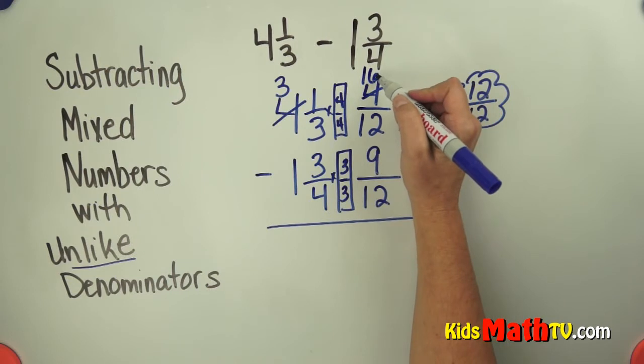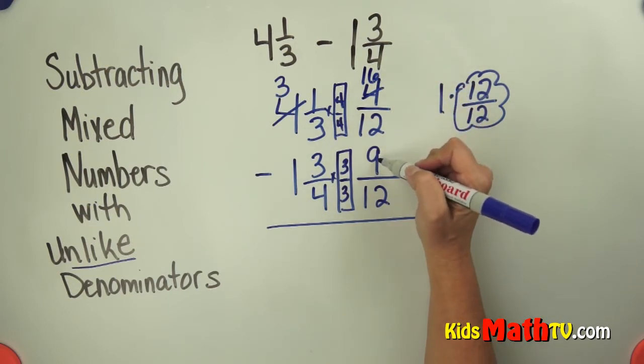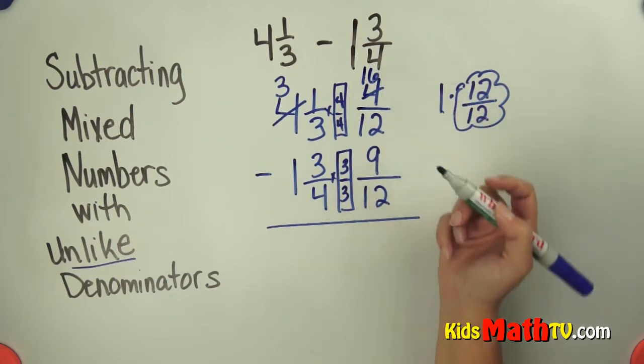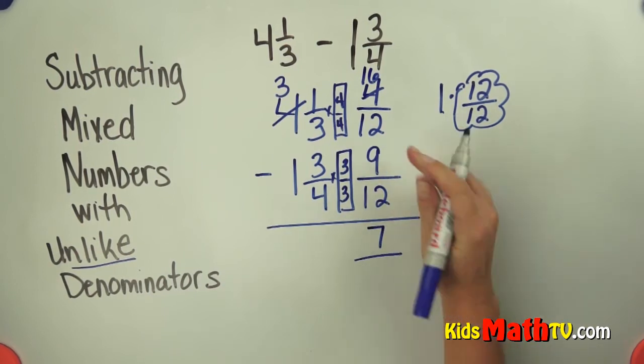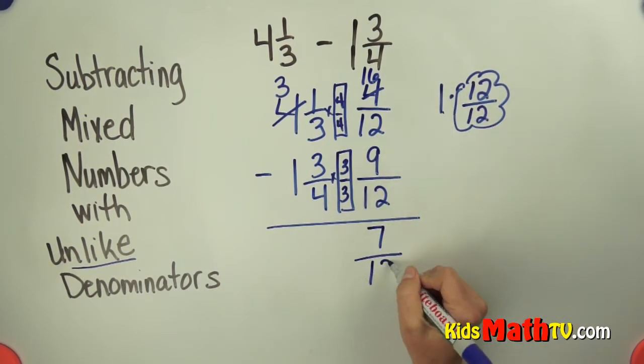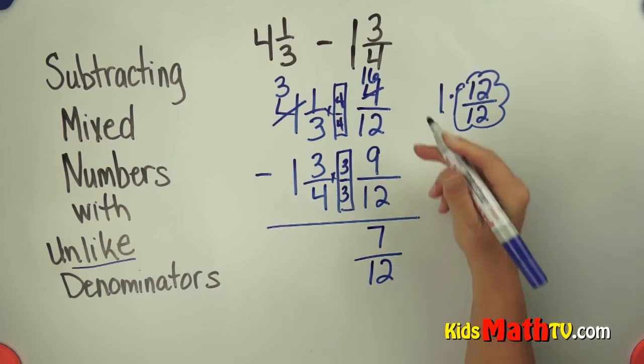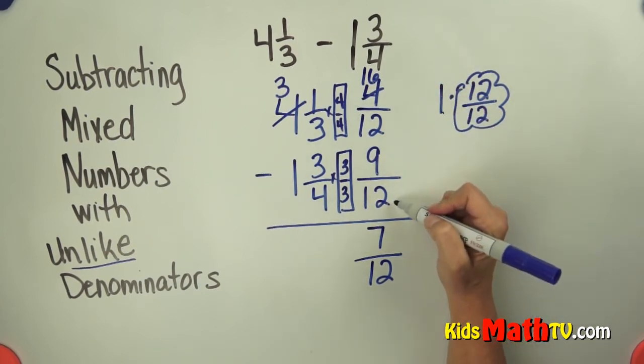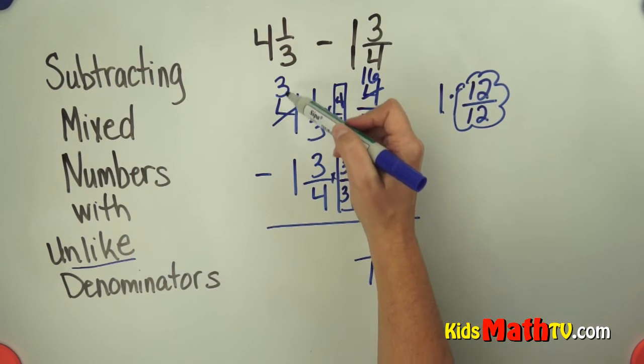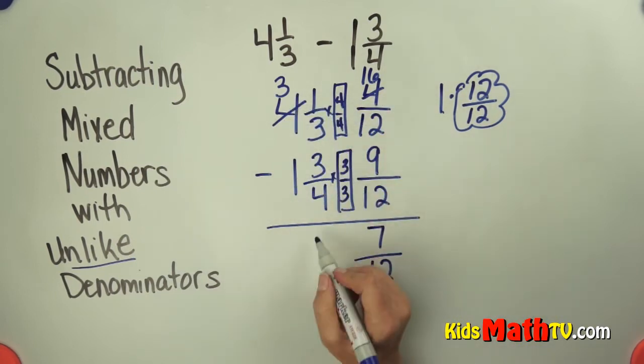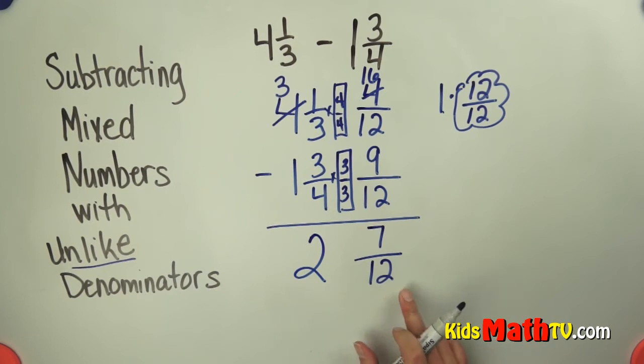So now I have 16 twelfths subtract 9 twelfths. And I can do that. 16 subtract 9 is 7. The denominator stays the same of 12. Now I've worked with my fractions. I can't forget my whole numbers. So over here I now have 3 wholes minus 1 is 2. So I have 2 and 7 twelfths.